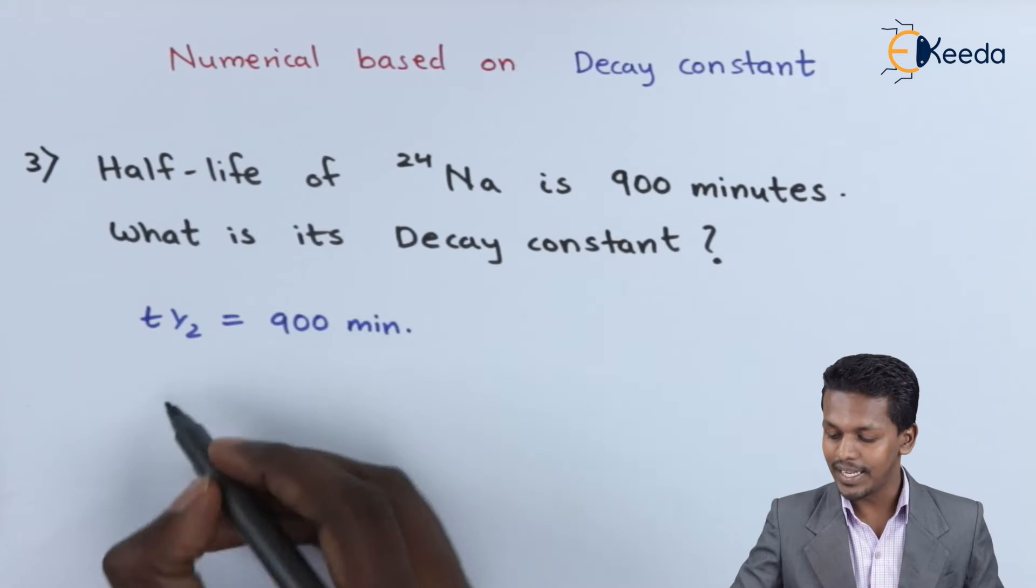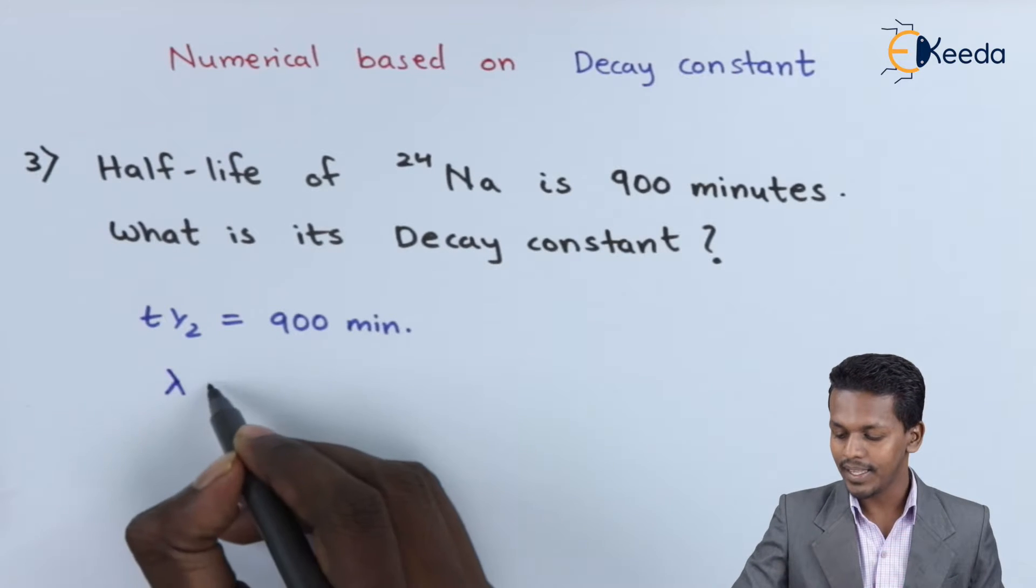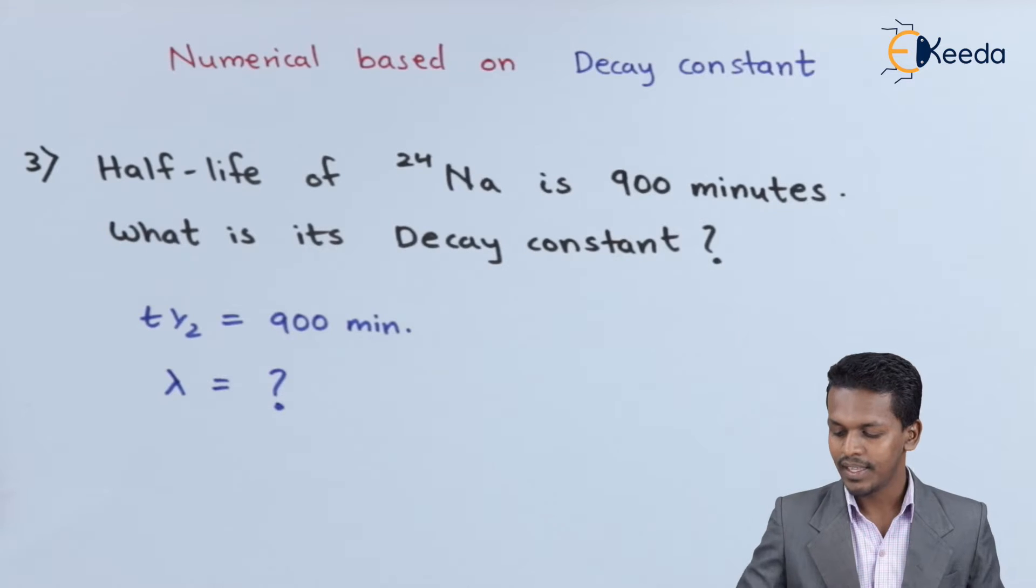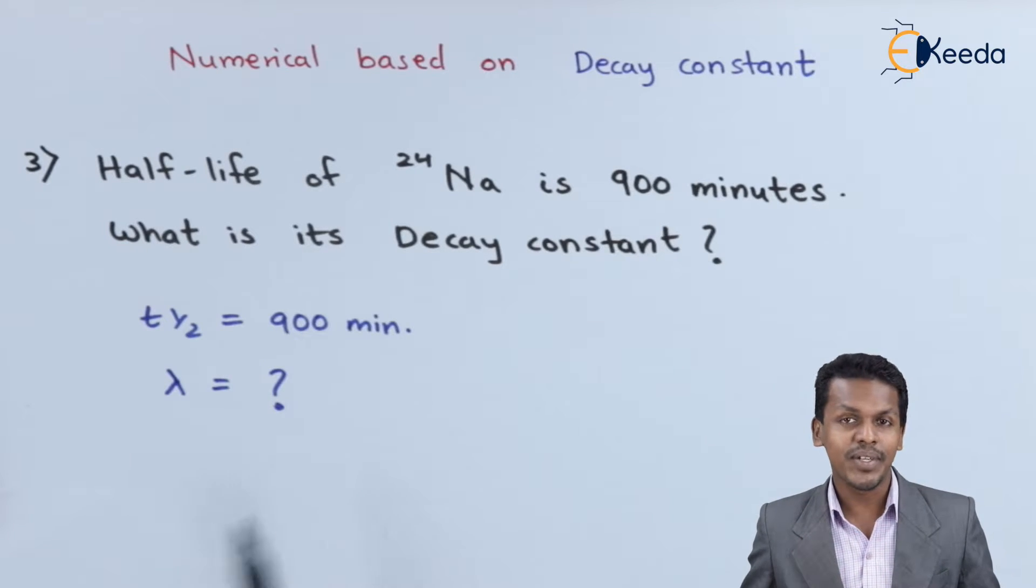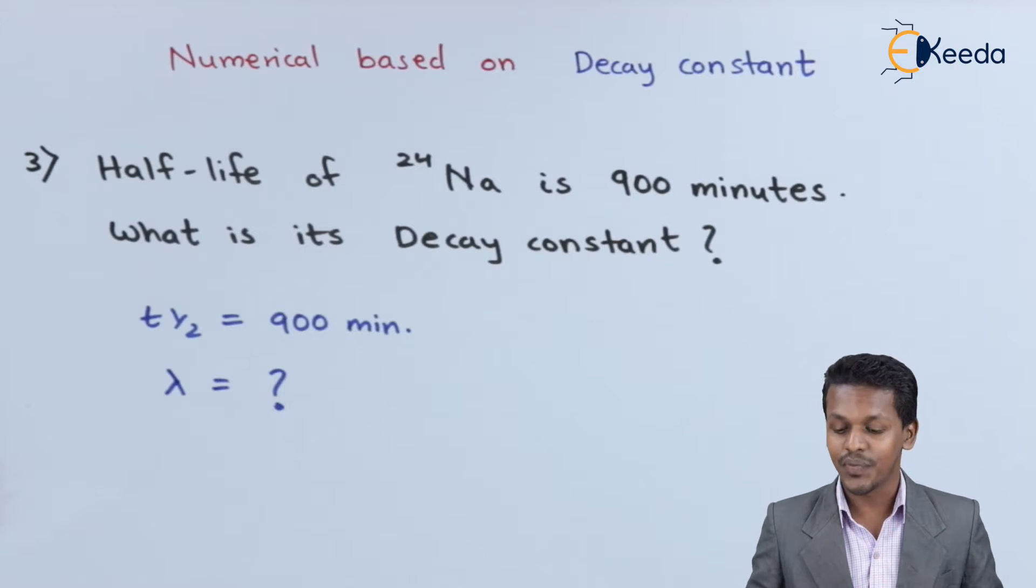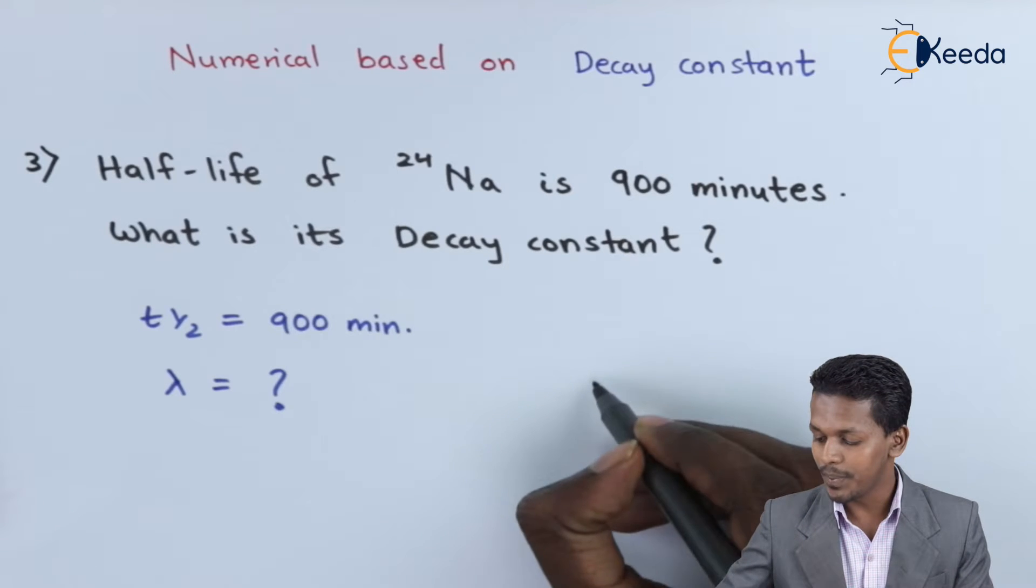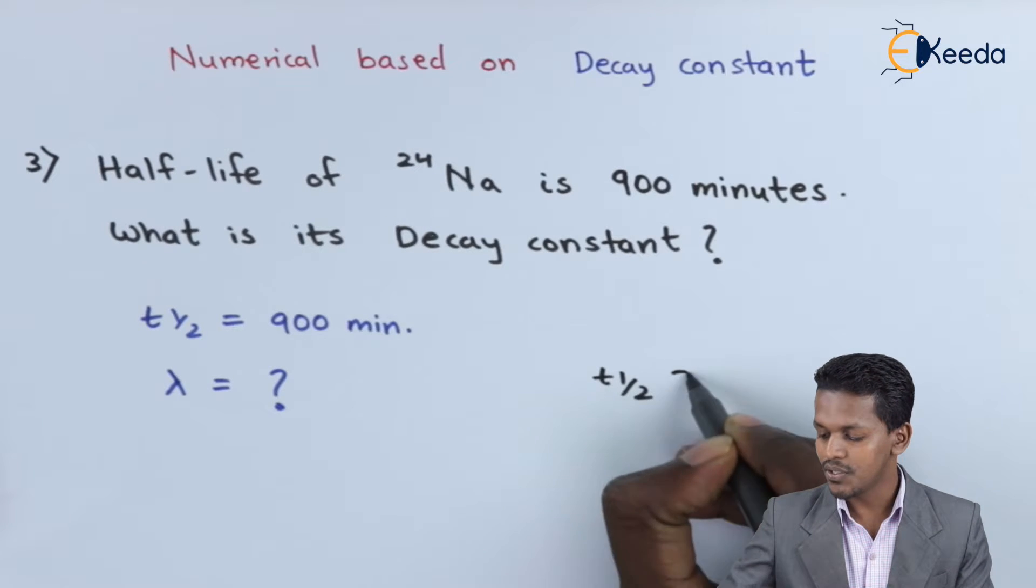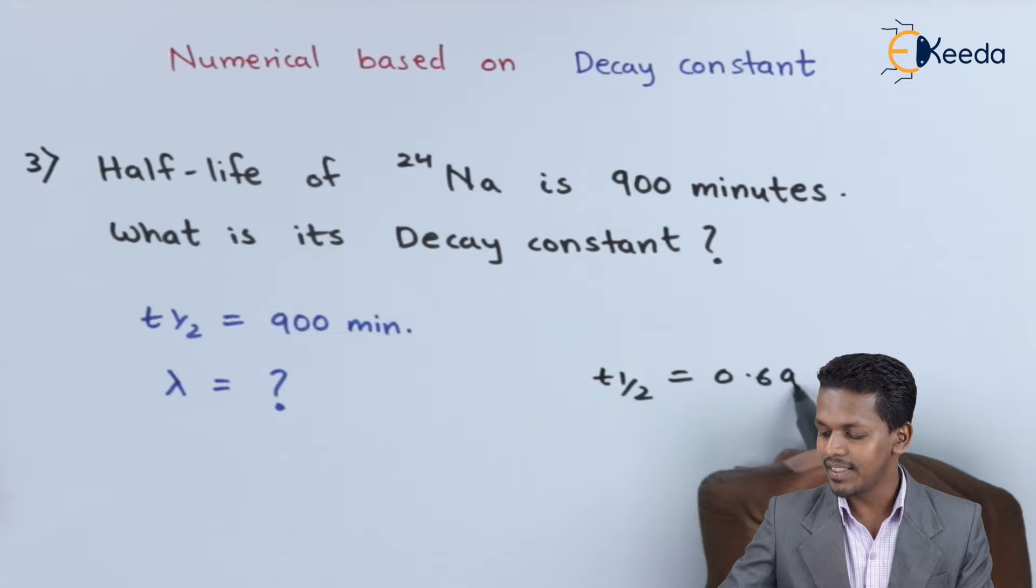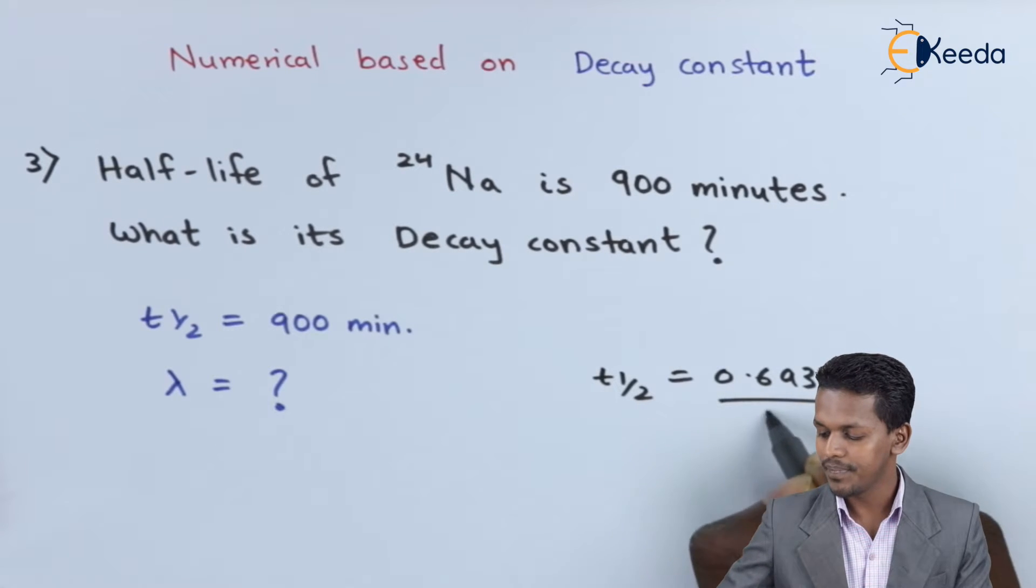For that, we have to calculate the decay constant, denoted by lambda. We can easily find this using the formula we know. The formula for the decay constant and half-life is: T½ = 0.693 divided by lambda.